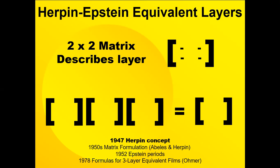What Herpin showed was if you had a high and a low index, which were above and below some index you wanted but could not find in nature, you could approximate or simulate that with three matrices of high, low, high, or low, high, low of your materials that you do have available.